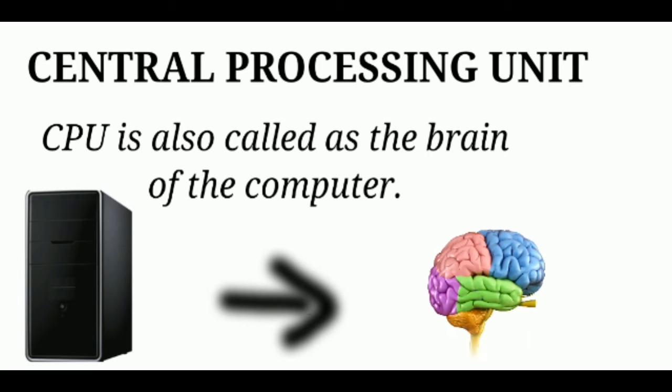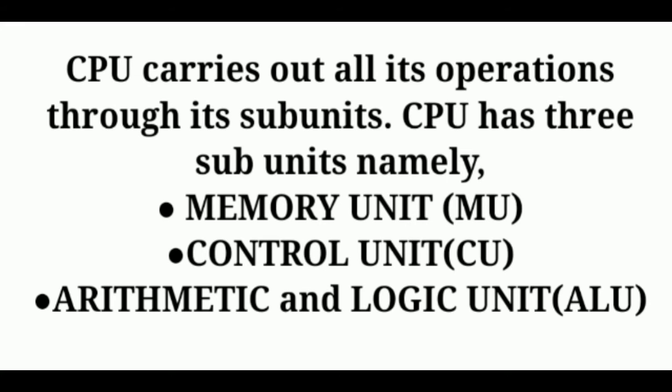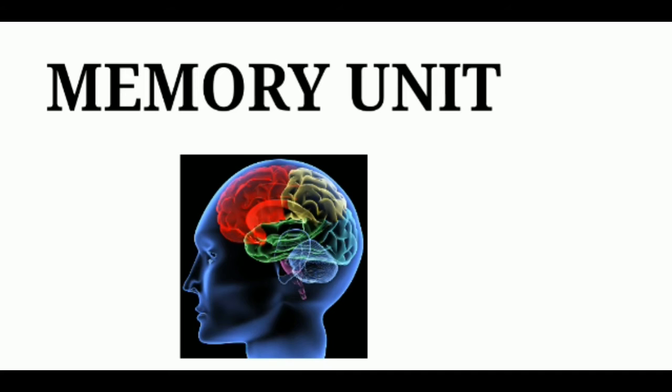Central processing unit is also called the brain of the computer. CPU consists of three units. Memory unit is where the computer stores all data and information for future purpose. The storage capacity of computer's memory is much higher compared to human's memory.